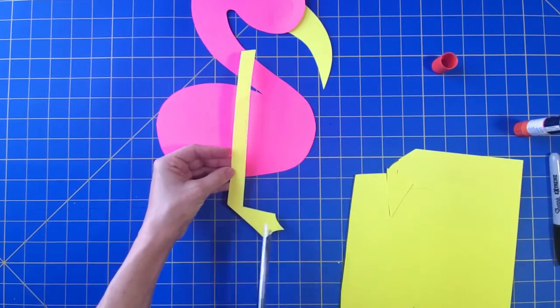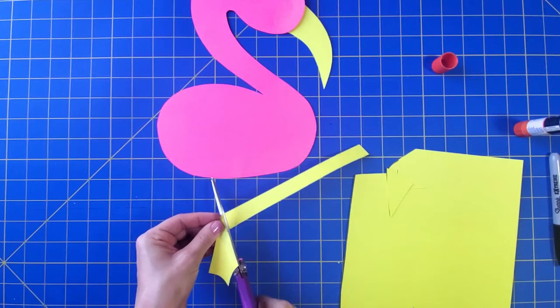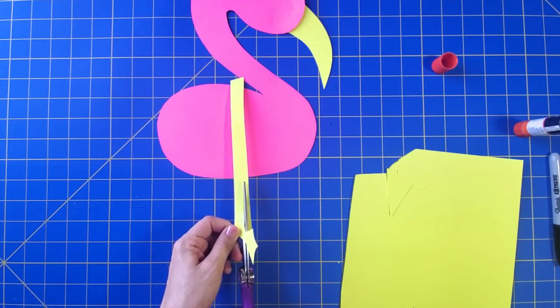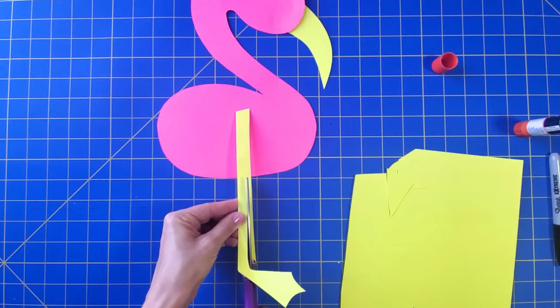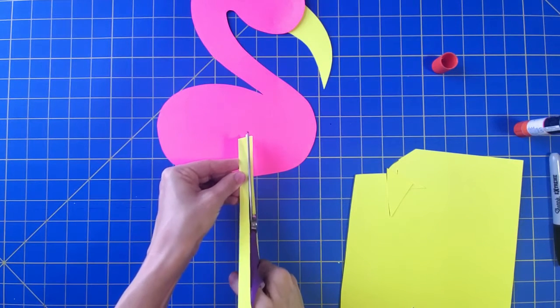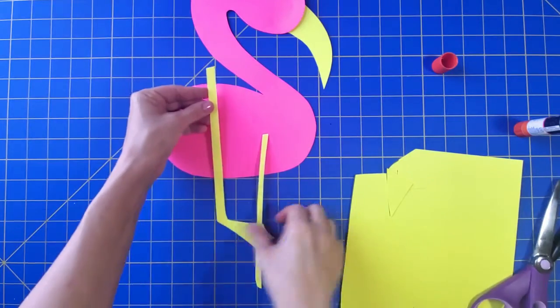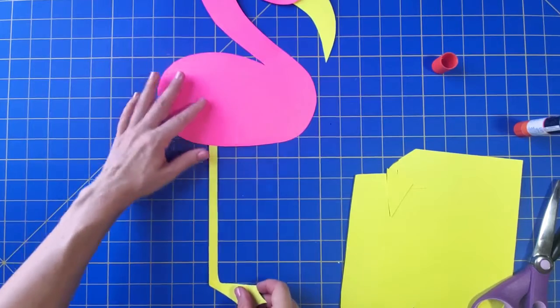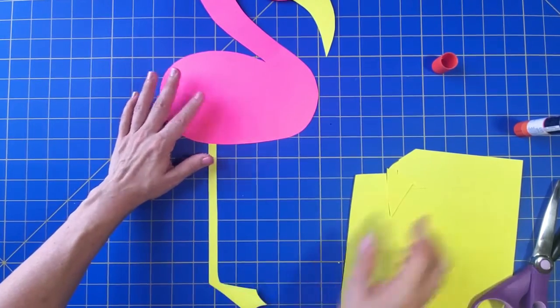Actually, I don't love the way I did the leg—I want it to be a little bit skinnier. So I'm just going to go ahead and fix it. If you want, you can draw a line first, or if you feel comfortable just cutting, go ahead. Okay, I like that much better. So there's my flamingo's leg.